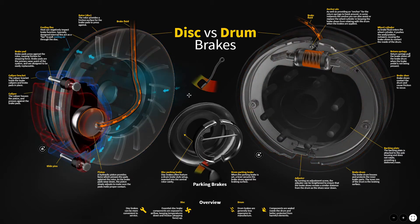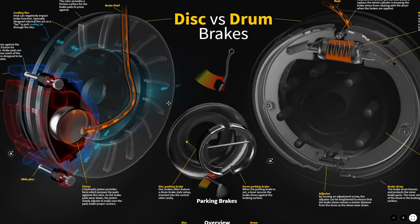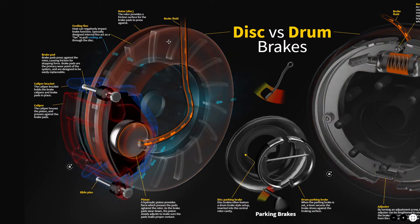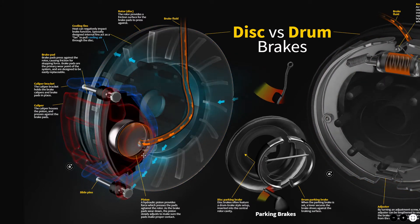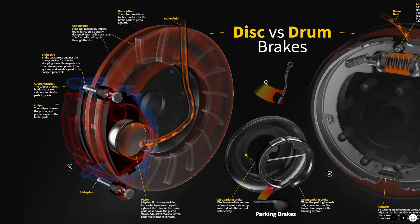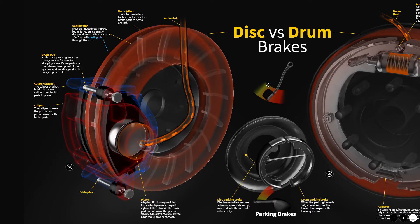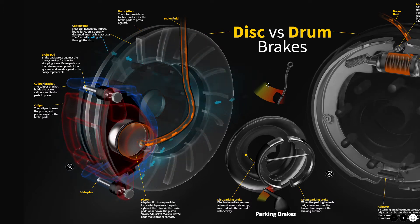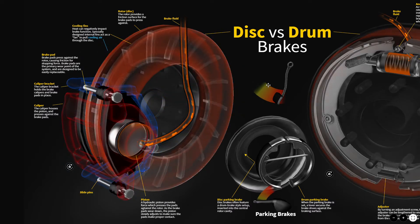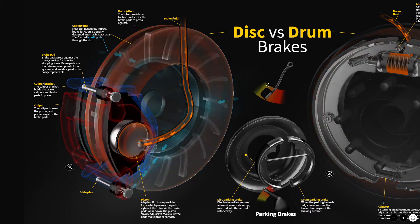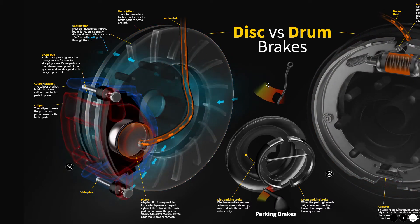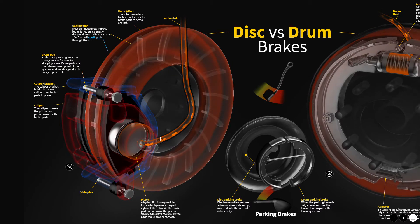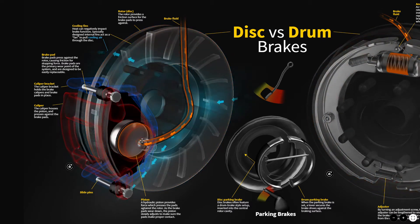Let's start with our disc brakes. We can use our scroll wheel to zoom in and see what's going on. The component you see spinning here is often known as the brake rotor or brake disc — a cast metal component that provides the friction surface for the brake pads. It attaches to the wheel hub and is what slows your vehicle. Following down, we see a tube, most likely a rubber hose, with brake fluid going to our caliper.